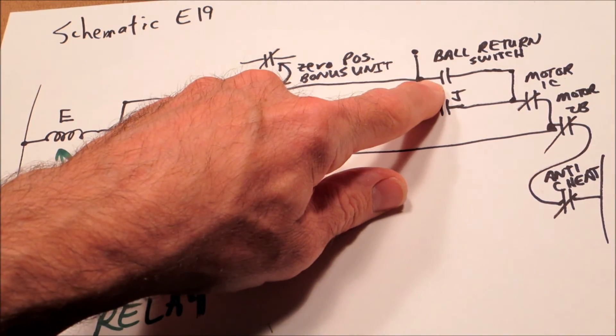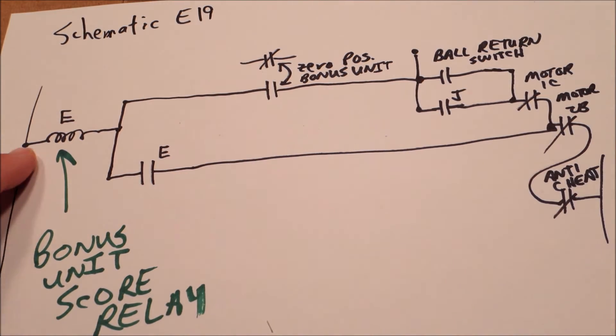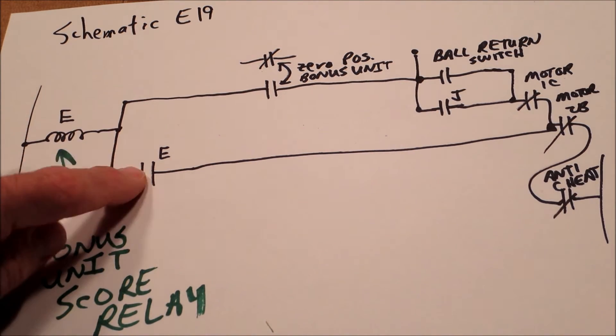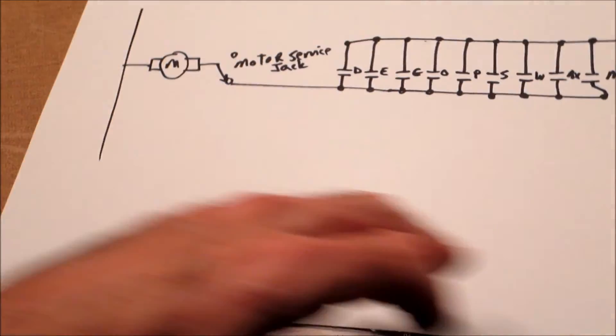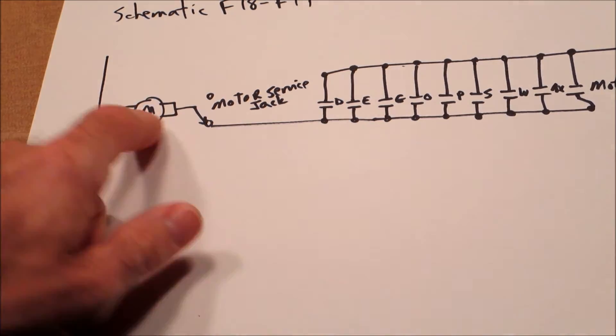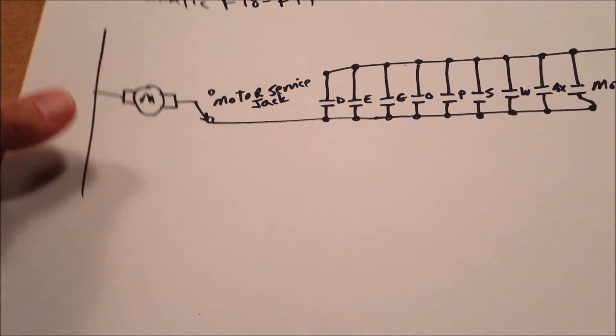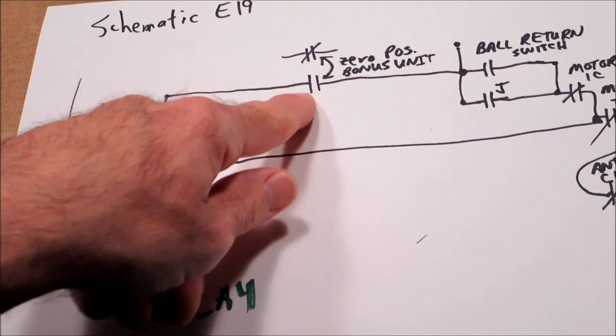All that we need is the ball return switch, the out hole, to close. And then what we'll get is this closing, which enables E, which is the bonus unit score relay. Now, when that happens, there's an E contact from that relay that will run the score motor. So what happens is the ball return switch closes. If there's any bonus, this is closed.